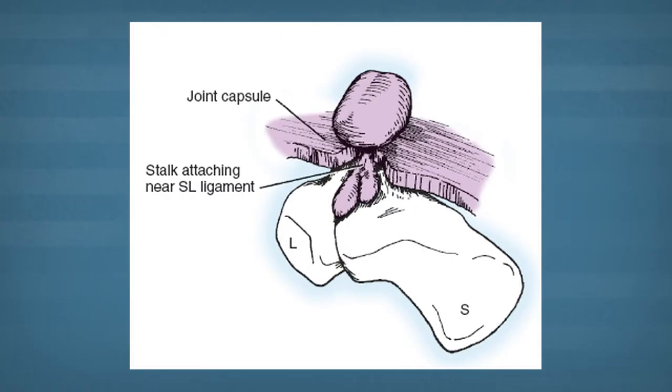If the cysts are still bothersome and resistant to the injection or aspiration, surgery can be recommended. The goal is to remove the cyst as well as the stalk that's causing it, so it doesn't recur.